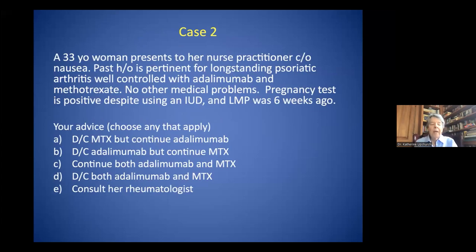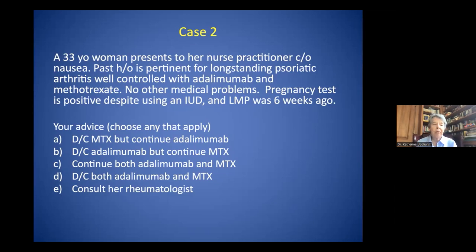Here is case two. A 33-year-old woman presents to her nurse practitioner complaining of nausea. Past history is pertinent for long-standing psoriatic arthritis, which was well-controlled with adalimumab and methotrexate. No other medical problems. A pregnancy test at the time of the visit was positive despite the patient using an IUD, and her last menstrual period was six weeks ago. Choose one of these options: stop methotrexate and continue adalimumab; stop adalimumab and continue methotrexate; continue both; discontinue both; or consult her rheumatologist.